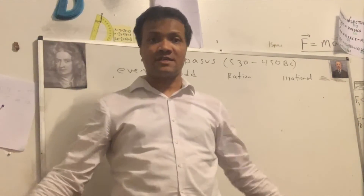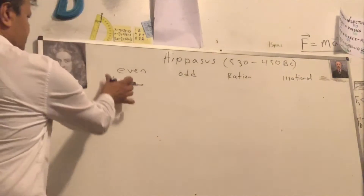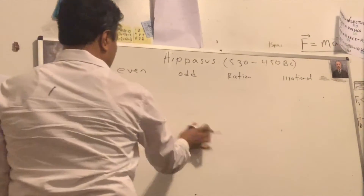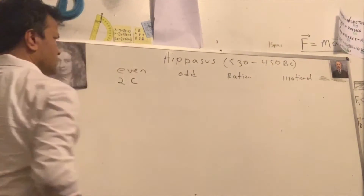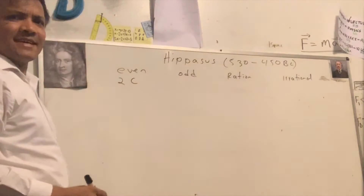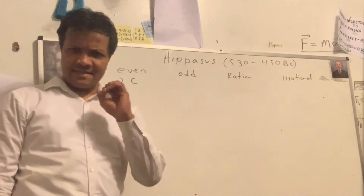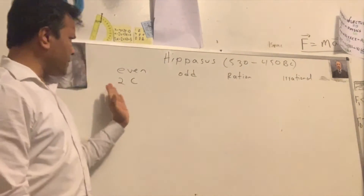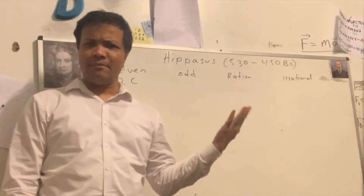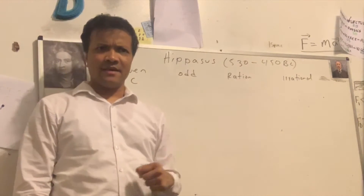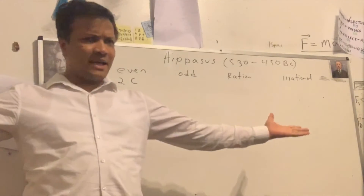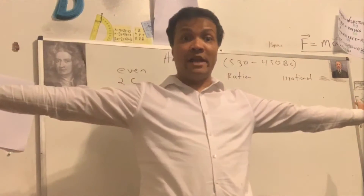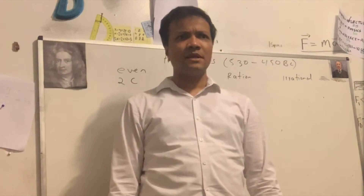Instead, we're going to use a notation. What would be the notation? 2C. Right, 2C is the even number. C is any number — any number you multiply by 2 becomes even. Now, can anybody give me an example of an odd number? 2C plus 1.